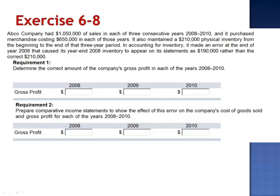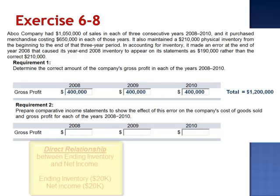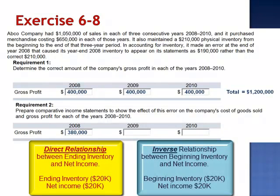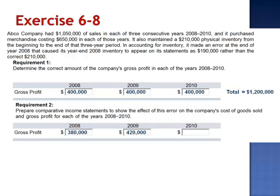When we look at the three years in total, the correct amount would have been $400,000 per year, for a total of $1.2 million over the three-year period. As a result of the error, gross profit was understated by $20,000 in 2008. Inventory errors are said to be self-correcting — in 2009, gross profit was overstated by $20,000, and in 2010 the amount was correctly stated at $400,000. When combined, the total is still $1.2 million. An inventory error that goes undetected will self-correct at the end of the second year.